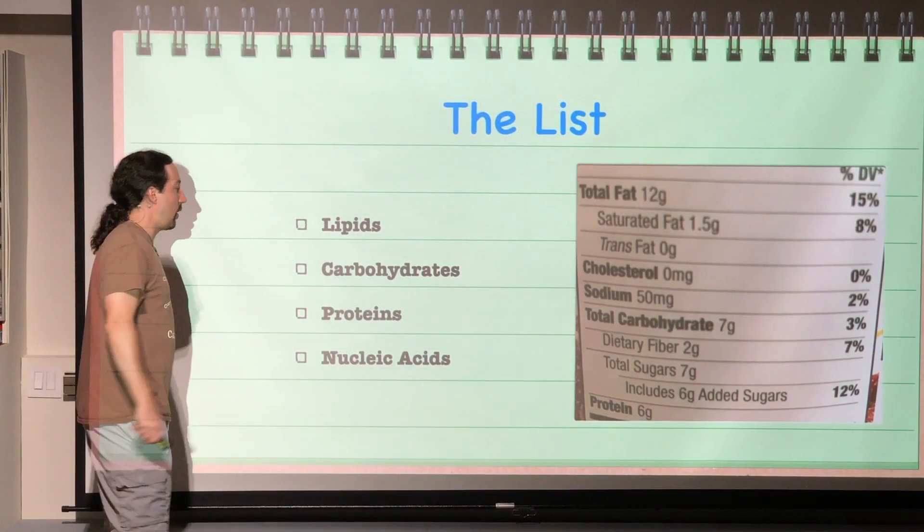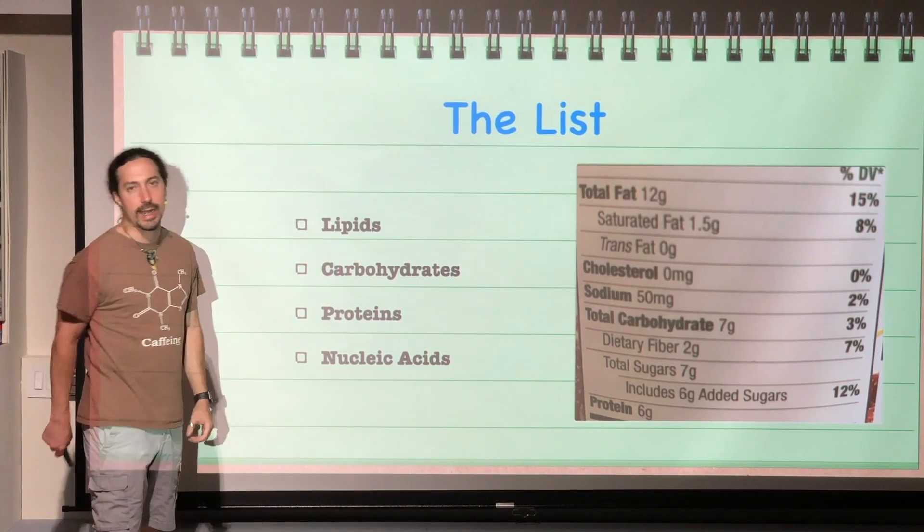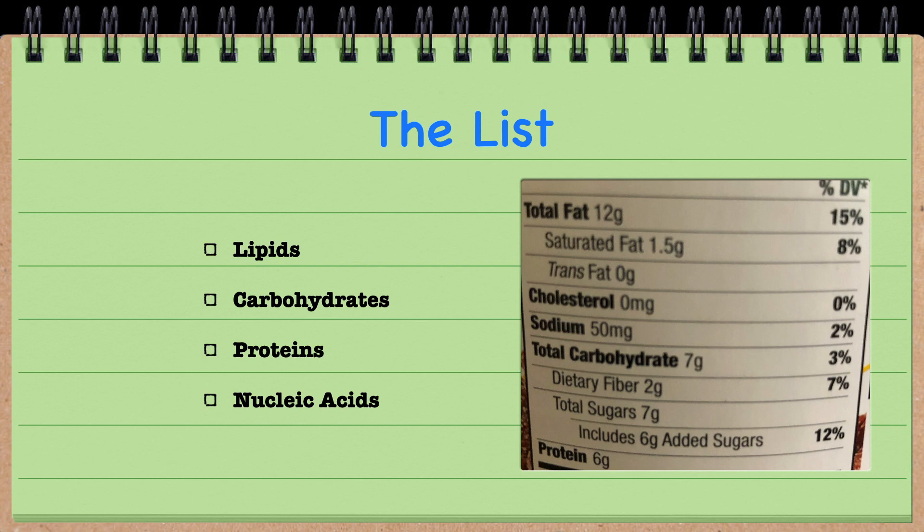Just so you are aware, this is the list of the biomacromolecules: lipids, carbohydrates, proteins, and nucleic acids. You've probably heard about some of these at some point in time, and we are going to cover them in this order.